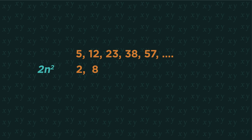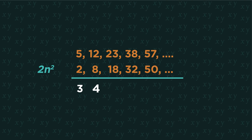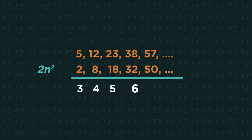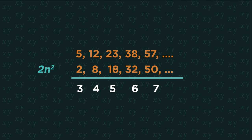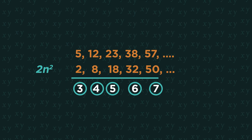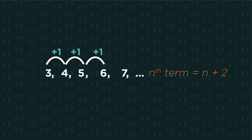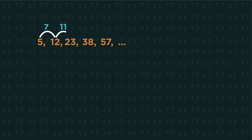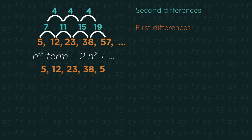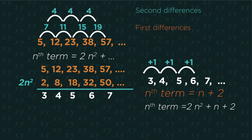Now write out the original sequence and 2 n squared underneath it. Find the difference between the two. Now you need to find the nth term rule for this. It's n plus 2. So the nth term rule for this quadratic sequence is 2 n squared plus n plus 2.